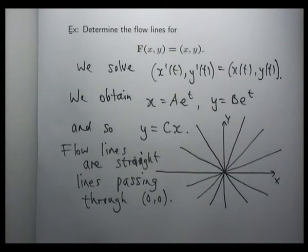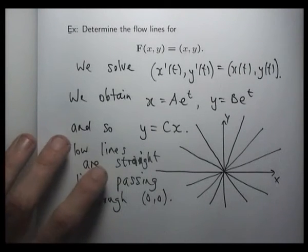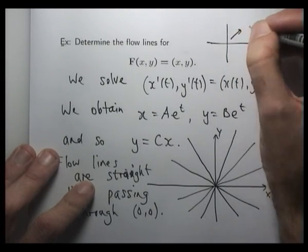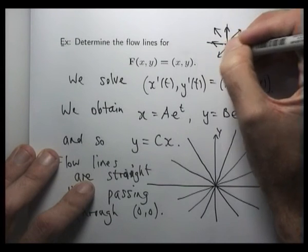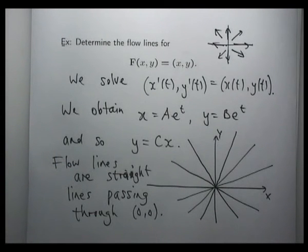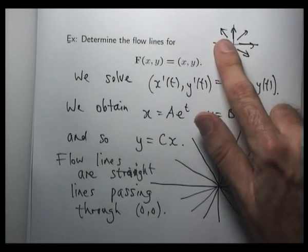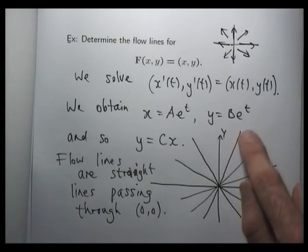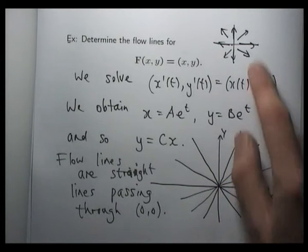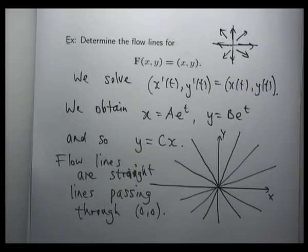Regarding the direction of these flow lines: if you draw the vector field — remember this is just the radial vector field — you can put together the direction of the flow lines by going back to the vector field. The flow lines are tangent to the vectors, and since the vectors are pointing away from the origin, we expect the actual flow lines to have the same direction.